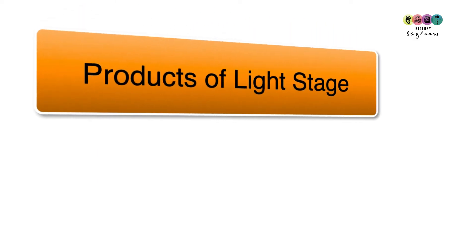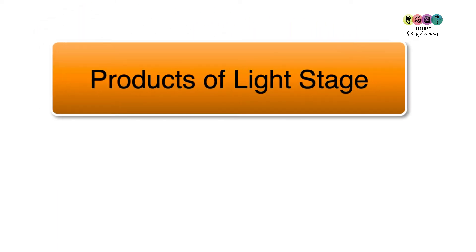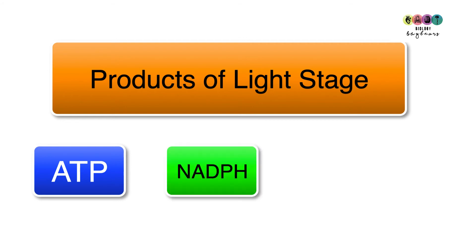So what are the products of the light stage? ATP was made in both pathway one and pathway two. NADPH was made in pathway two, and oxygen was made in pathway two as a result of photolysis of water.